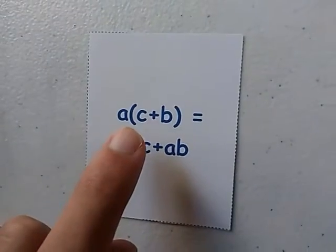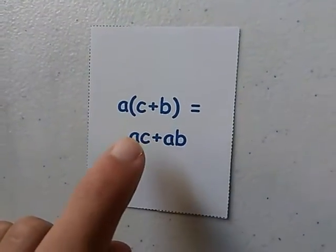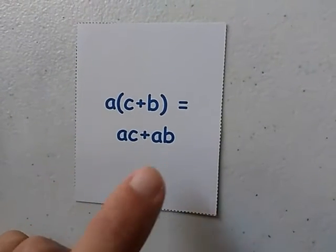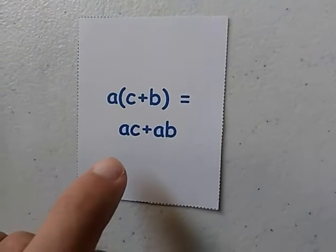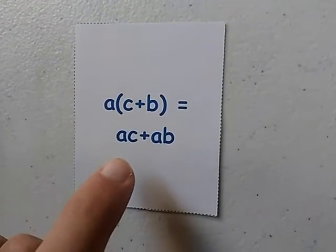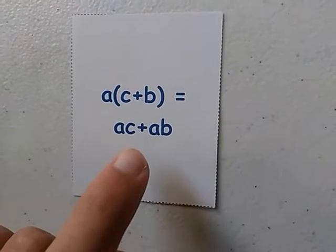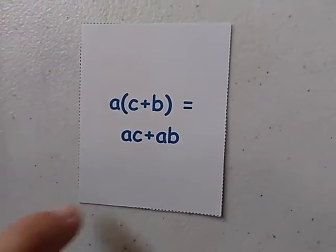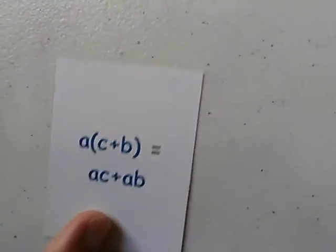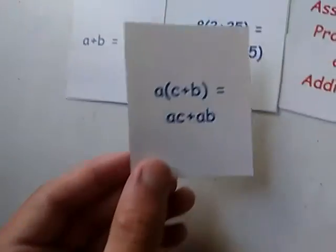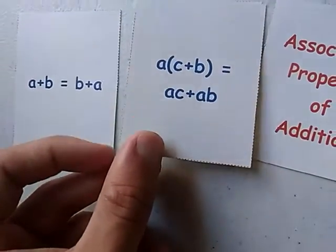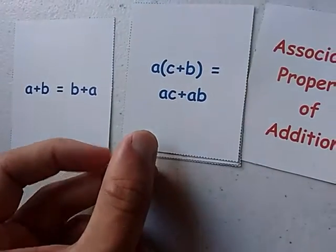C plus b times a equals a times c plus a times b. This is also the same as the Distributive Property, only using variables this time, not numbers.